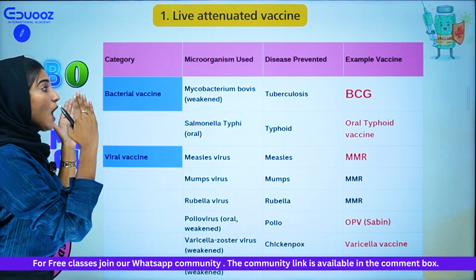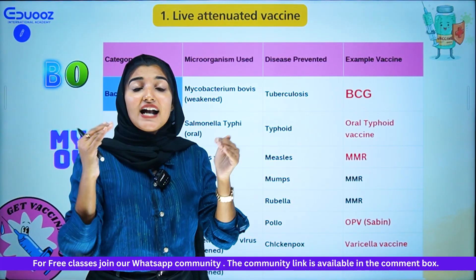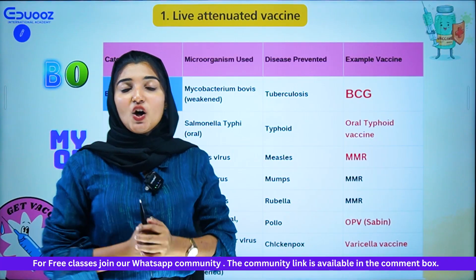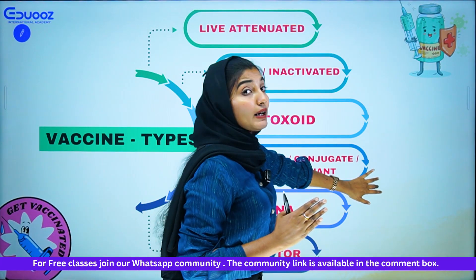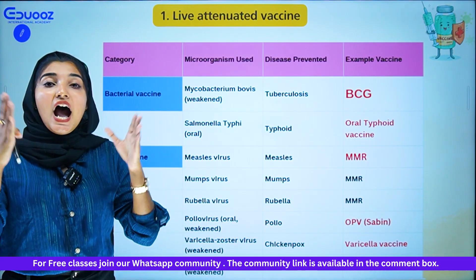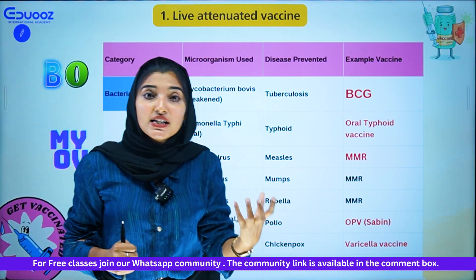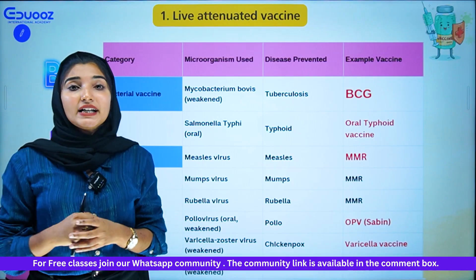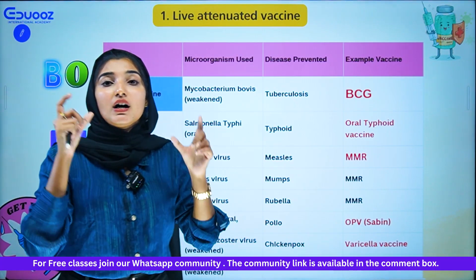This is the vaccine category. We will look at what microorganism is available for each vaccine, which disease we vaccinate against, and the name of the main vaccine. First, let's discuss the live attenuated vaccine. In a live attenuated vaccine, we use live microorganisms — either bacterial or viral. Let's look at the bacterial vaccines and the viral vaccines.